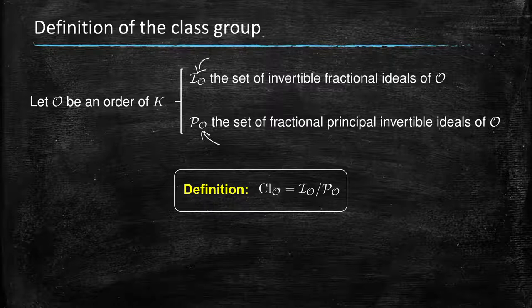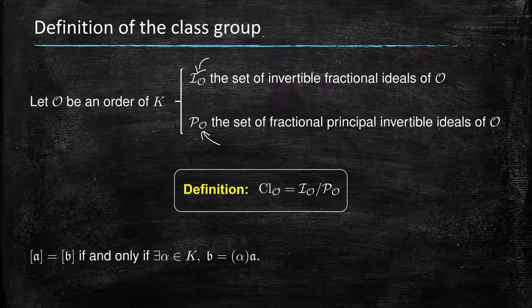Concretely, what that means is we identify, we put two ideals A and B in the same class modulo the principal ideals if and only if one is equal to the other times a principal ideal, so times the fractional ideals of the form alpha times the ring O.